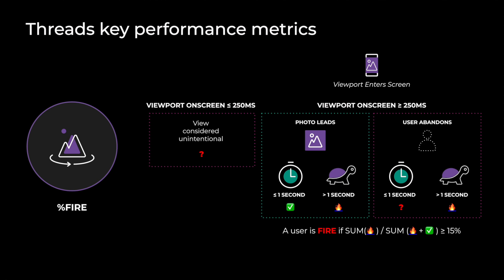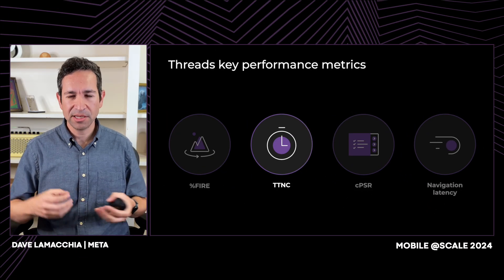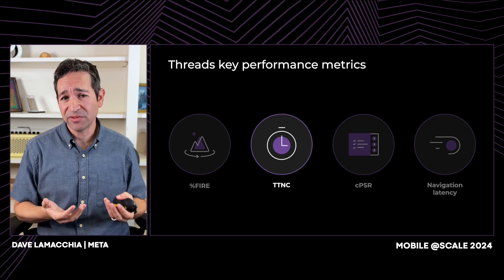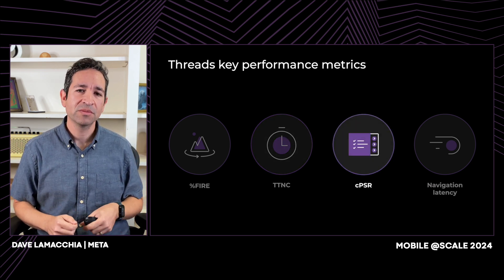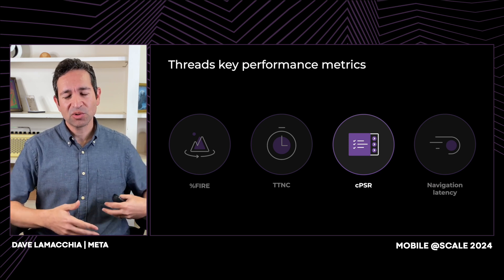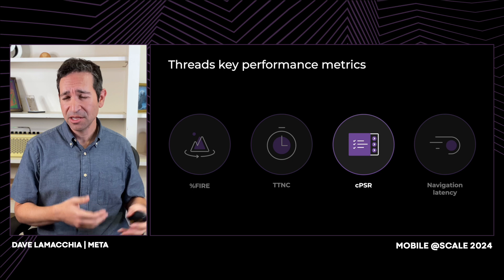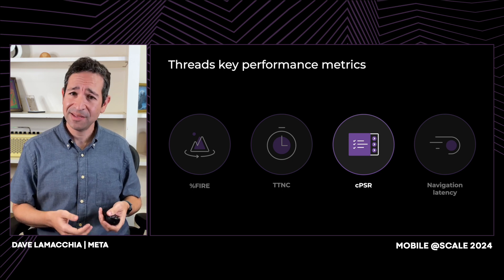FIRE is the frustrating image render experience — the percent of users who experience images that are slow to load or who abandon the app entirely. We try to keep that to a minimum. TTNC, or time to network content, measures how quickly we can load content from our servers and display it on the device. CPSR, creation published success rate, measures how many people who go to publish something actually succeed — for posts with text, photos, or video.